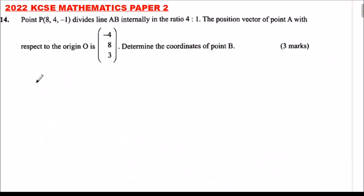2022 KCSE Mathematics Paper 2, number 14. Point P, coordinates (8, 4, -1), divides line AB internally in the ratio 4:1. The position vector of A with respect to the origin O is (-4, 8, 3). Determine the coordinates of point B.